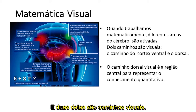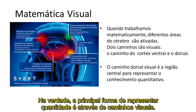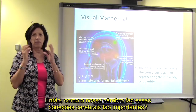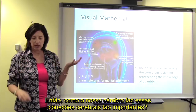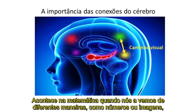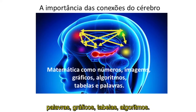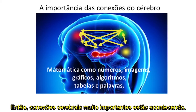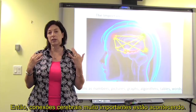In fact, the main way of representing quantity is through visual pathways. So how does the brain make very important connections? It happens in math when we see math in different ways — when we see numbers, pictures, words, graphs, tables, algorithms — and we connect between them. Then really important brain connections are happening.